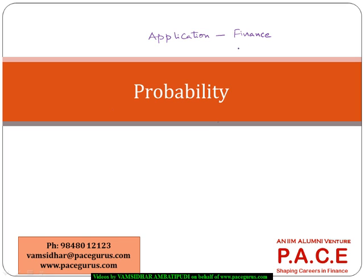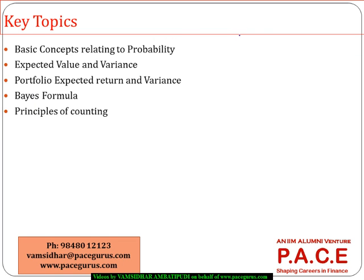We're moving towards the world of investments and risk management finance where probability can be applied. As a quick agenda, we'll be discussing different concepts relating to probability, right from the definitions to different key terms: conditional probabilities, mutually exclusive, independence, joint probabilities, and various rules relating to probability — the addition rule and the multiplication rule.